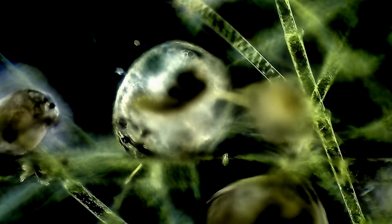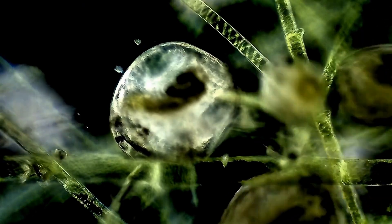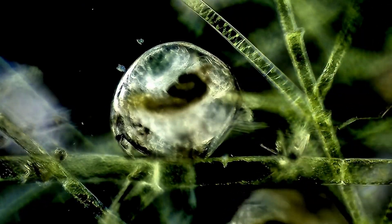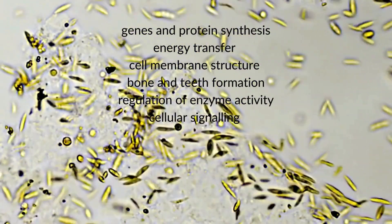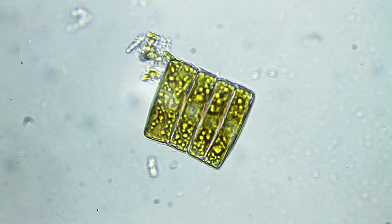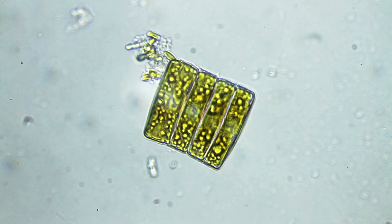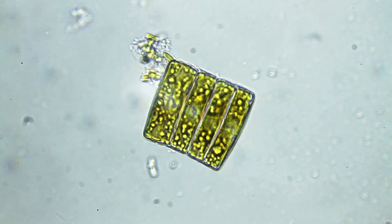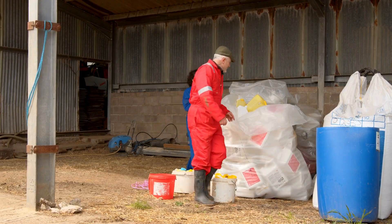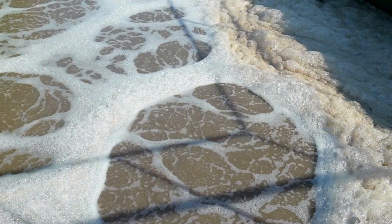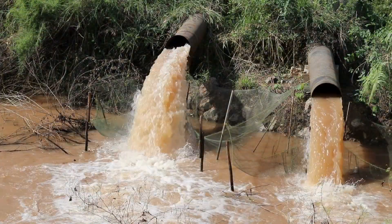At the core of eutrophication lie nutrient runoffs which are rich in phosphorus and nitrogen. These nutrients, which are indispensable for the growth of plants, find their way into waterbodies through various sources. This includes agricultural fertilizers, sewage, and industrial effluent.